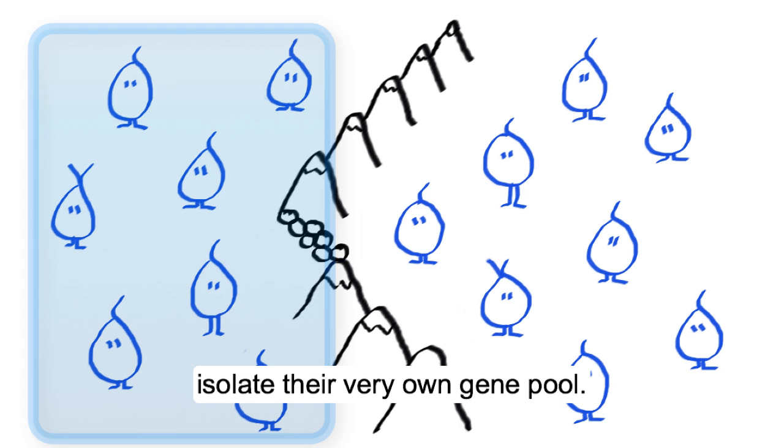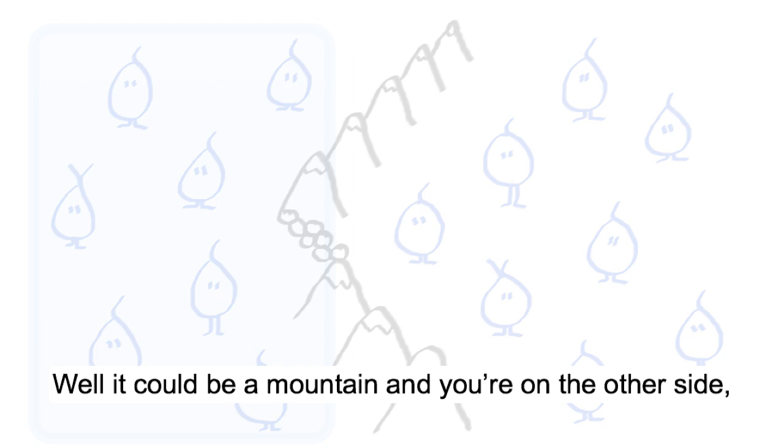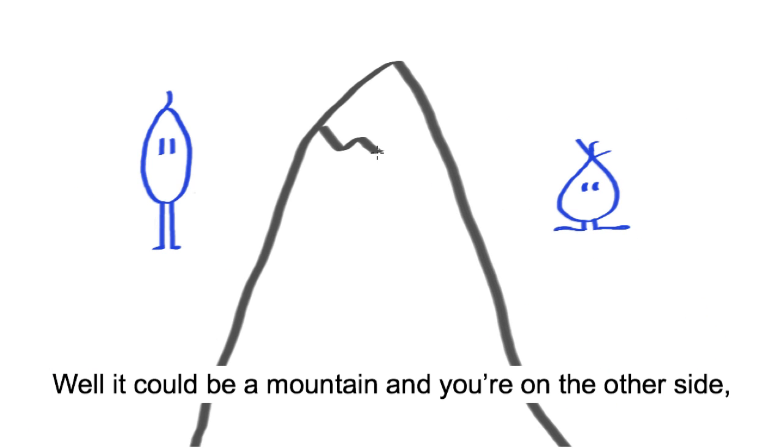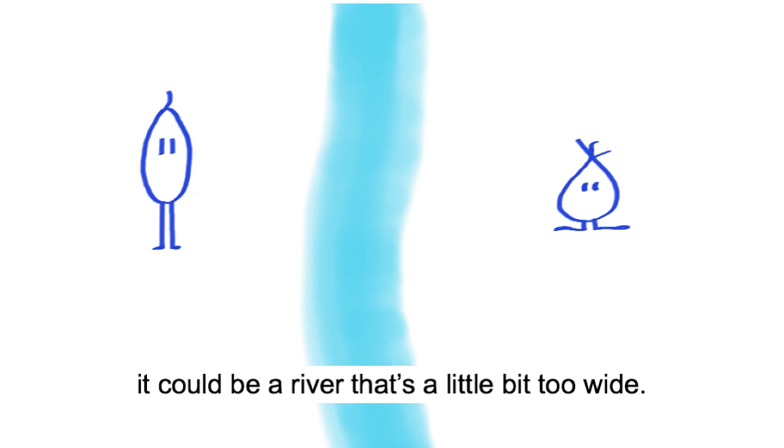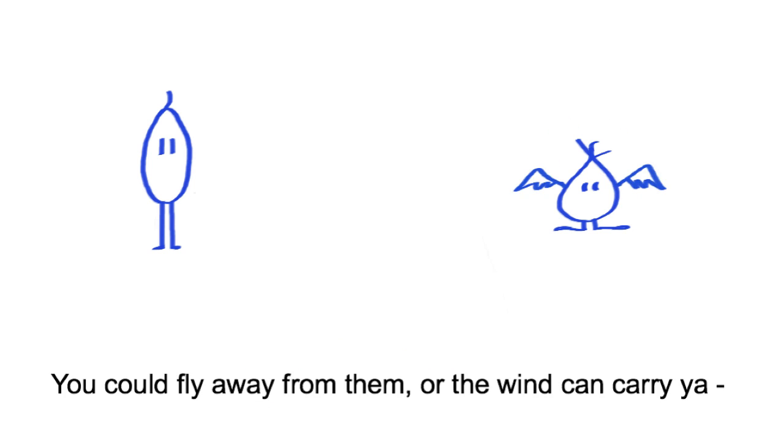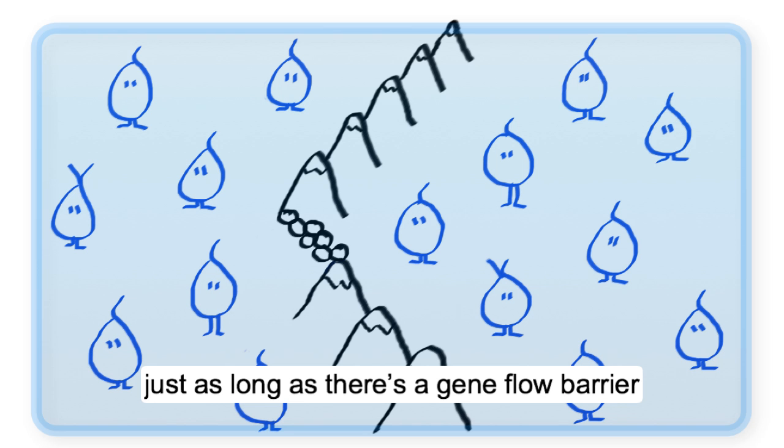Well it could be a mountain that you're on the other side, it could be a river that's a little bit too wide, or you could fly away from them or the wicked barrier. Just as long as there's a gene pool barrier.